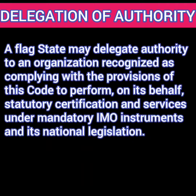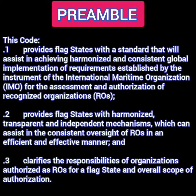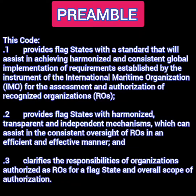Diving into the code now, it starts with a preamble. The first point says that this code provides the flag state with a standard that will assist in achieving a harmonized and consistent global implementation of the requirements established by various instruments like SOLAS, MARPOL, etc. The second point says that this code provides the flag state with a harmonized, transparent, and independent mechanism which can assist the consistent oversight of ROs in an efficient and effective manner. And the third point clarifies the responsibilities of the organization authorized as RO for a flag state and the overall scope of authorization.